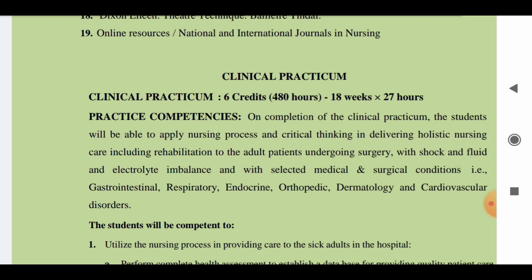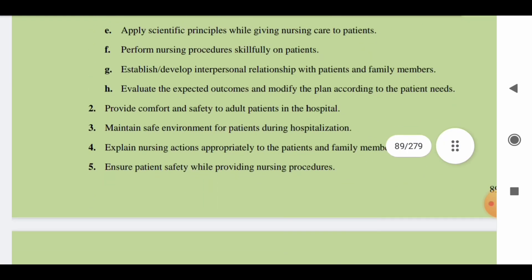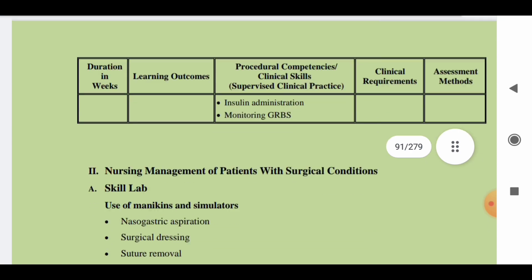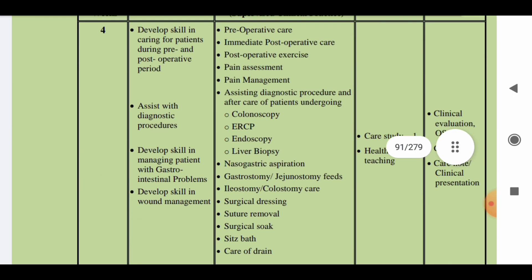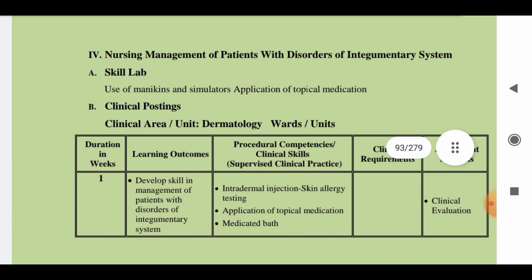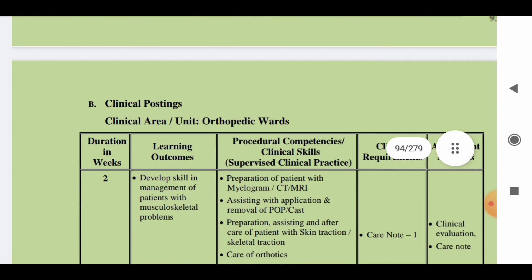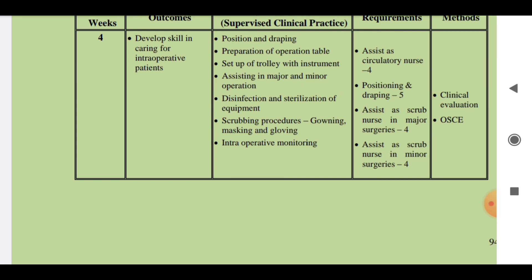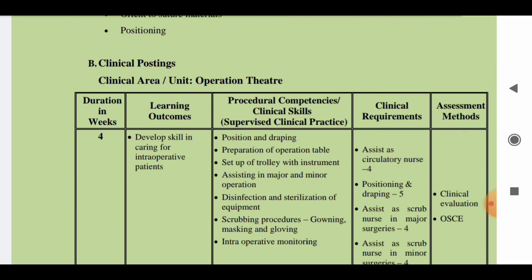Practical is also important for adult health nursing. There are 18 weeks of clinical posting, equaling 80 hours in the third semester. You will have postings in various areas: general medical wards, general surgical wards, cardiology wards, dermatology wards, isolation wards, orthopedic wards, and definitely in the operation theater, since you are studying OT techniques in the third semester. There is also one mandatory module — BCLS — which each and every student must complete.